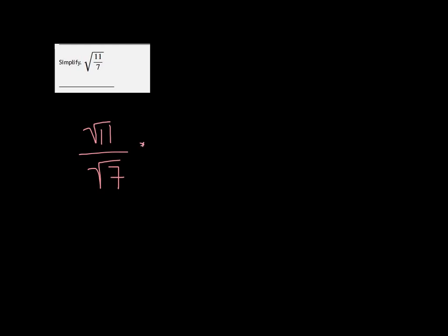But then you want to get rid of any radicals that you have in the denominator by multiplying the top and the bottom by root 7.